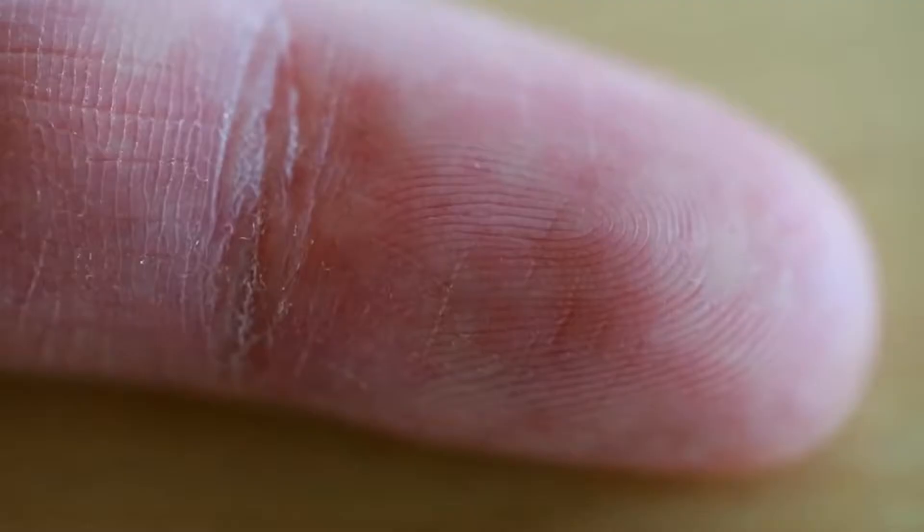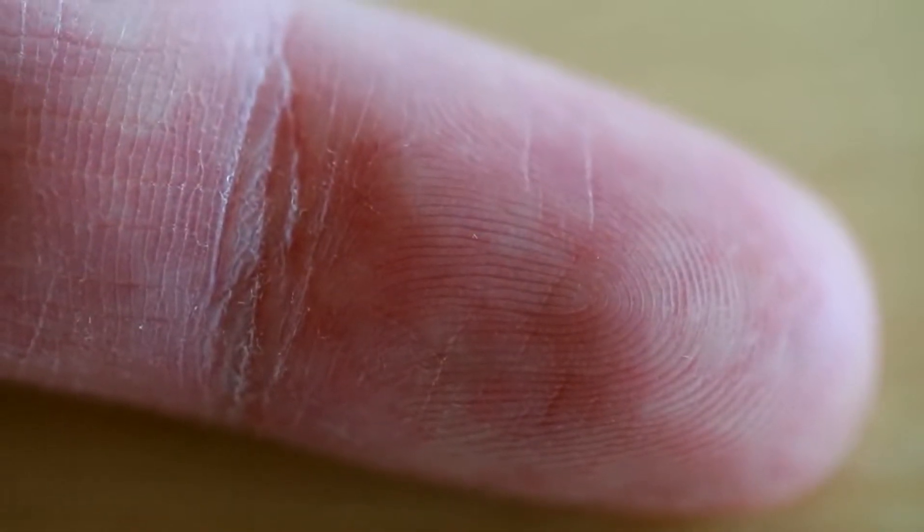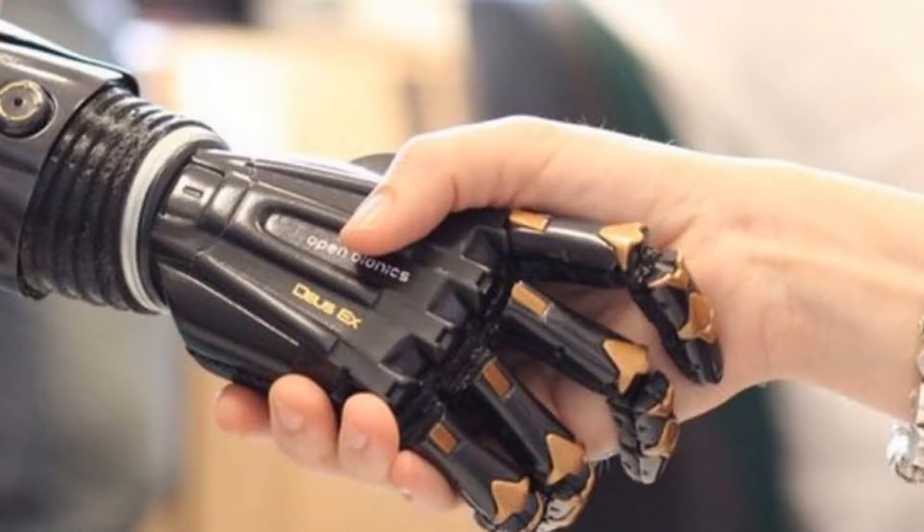The artificial nerve system has three components connected to each other. The first component is a touch sensor, which is able to sense the tiniest forces. Afterwards, the sensor sends signals to the second part, which is flexible electronic neuron. Sensory signals from these components stimulate the third component, an artificial synaptic transistor modeled after human synapses.